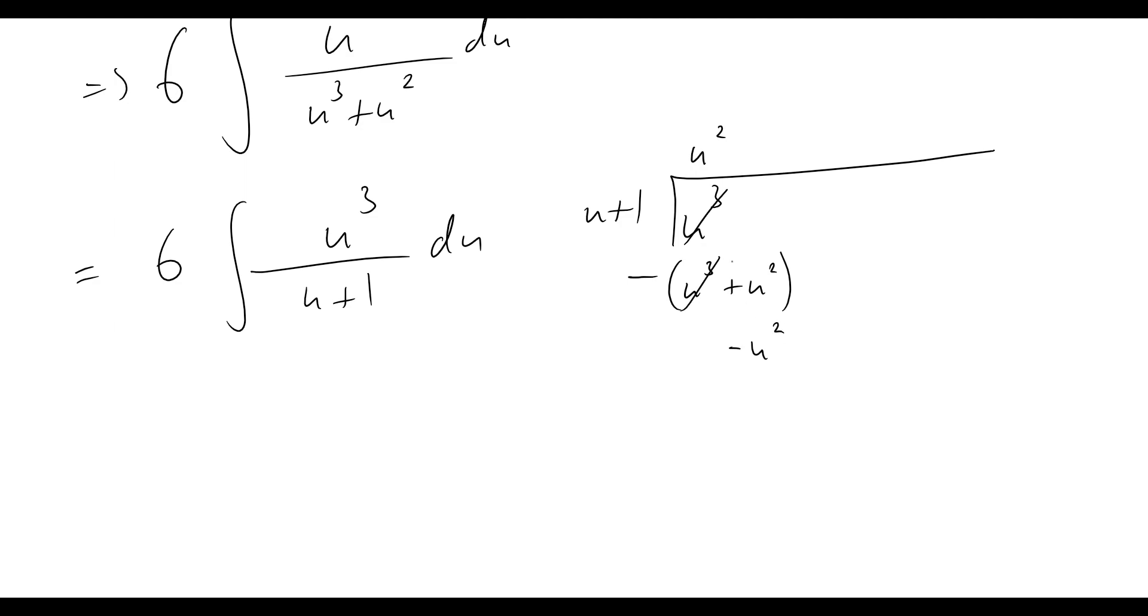So now we've got minus u squared. How many times does u go into that? That would be minus u times. Minus u times positive 1 is minus u, and so now since we have that negative there we know that will cancel out with that and we'll end up having just a plus u being brought down there now. So how many times does u go into u? Well that's an easy one just one times.